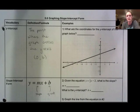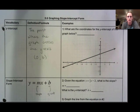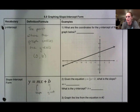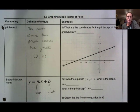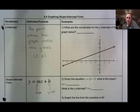Hi guys, we're continuing with our idea of slope and lines. So in this section, which corresponds to 5.6 in your book, we're going to talk about how to graph things in slope-intercept form. So there are two important pieces here. One is the y-intercept — this is the point where the graph crosses the y-axis, and we use the letter B to represent the y-intercept.